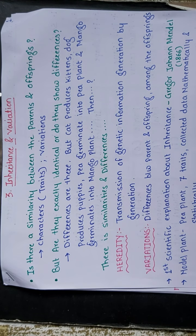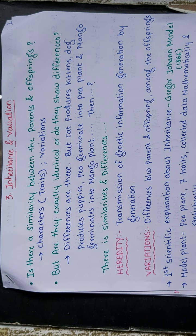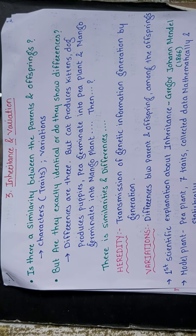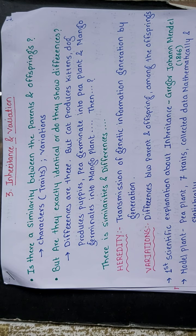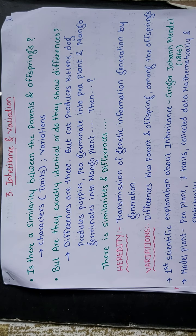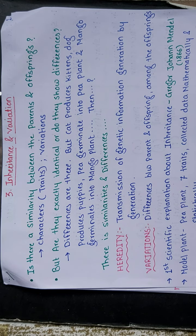Two concepts come out of this: one is heredity and another is variation. Heredity is the transmission of genetic information generation by generation — one unique genetic information transforming from one generation to another. Variation, simply put, means differences. Differences between parents and offspring, and among offspring, are nothing but variation.